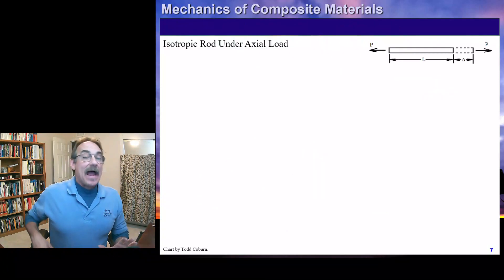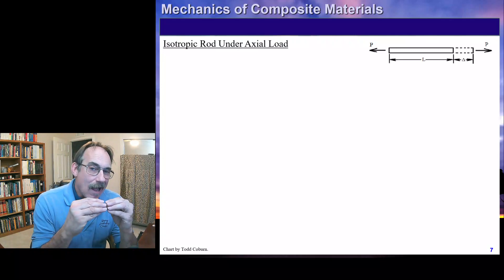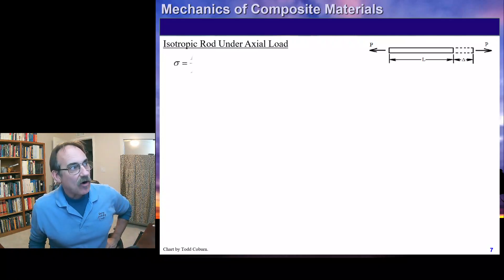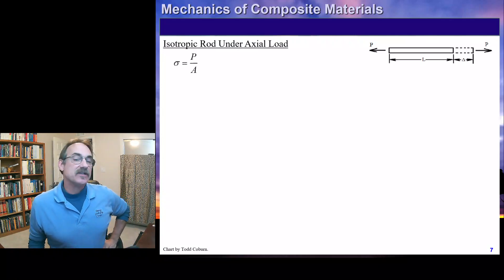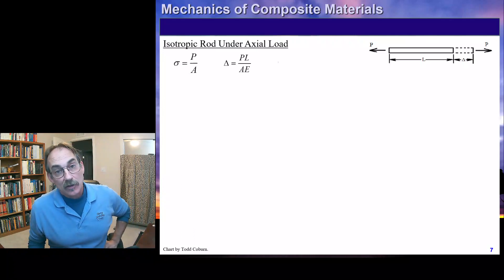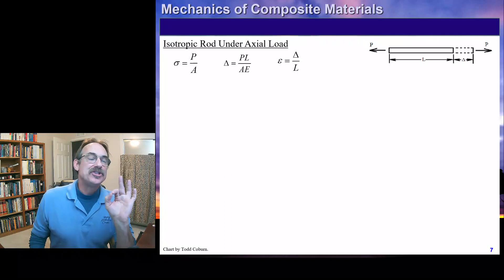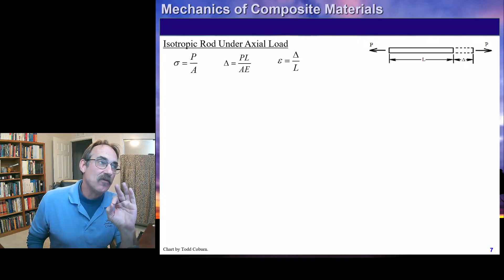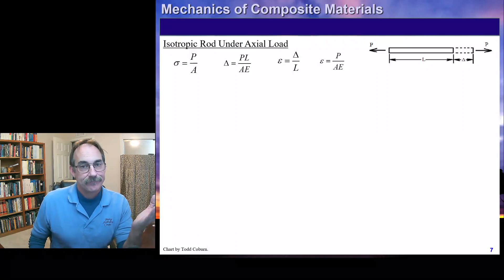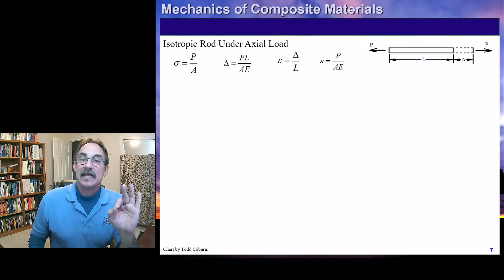Now let's think back to an isotropic rod under axial load. We know that the stress is just P over A, the deflection is PL over AE, the strain is just the deflection over the original length, and we could also write that strain as P over AE by combining these equations. Don't forget this — let's take another step forward.